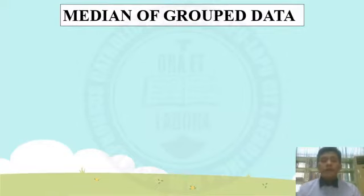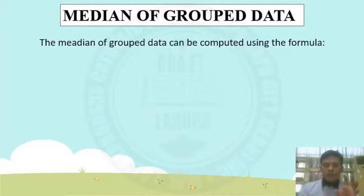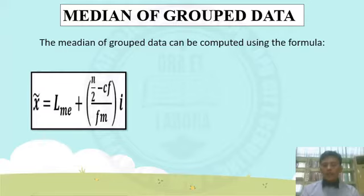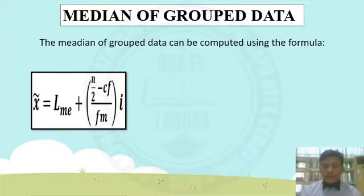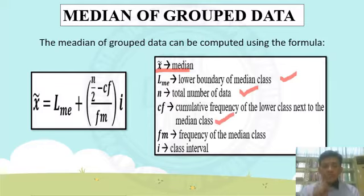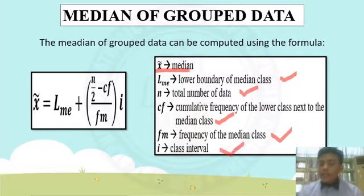Now we'll discuss the median of grouped data. The median of grouped data is computed using the formula: Median equals the lower boundary of the median class, plus the quantity (n over 2 minus the cumulative frequency before the median class), divided by the frequency of the median class, multiplied by the class interval i. Where n is the total number of data, cf is the cumulative frequency of the class before the median class, fm is the frequency of the median class, and i is the class interval.